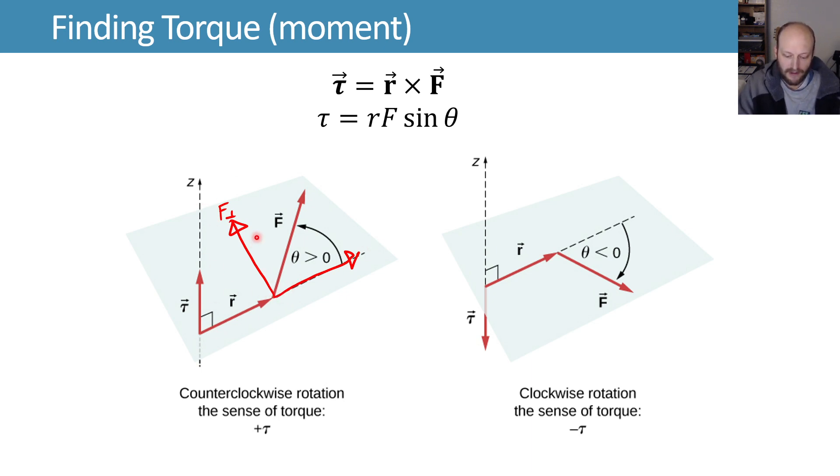And so if you do F sin theta, that gives you the perpendicular component, and that's the part that's going to try and make it spin. So rF sin theta, you can think about that giving you the perpendicular component of the force, or you can think about it giving you the perpendicular component of the lever arm, where our lever arm, if we use r sin theta, that'll give us that perpendicular component of the lever arm.